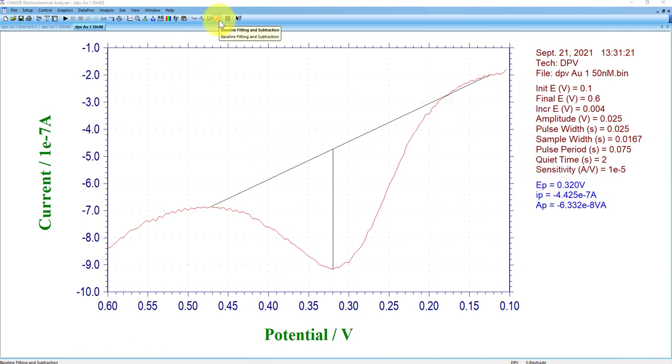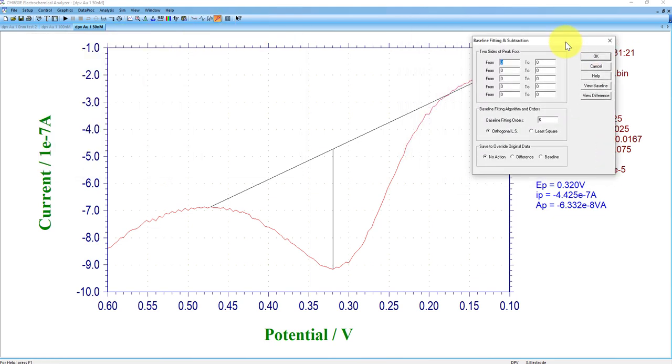You're going to navigate up in the CHI software to the baseline fitting and subtracting button, and then you're going to get this prompt.